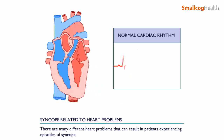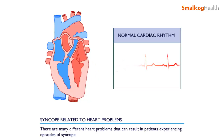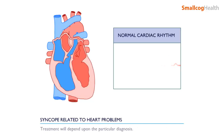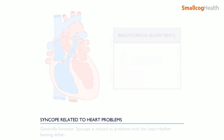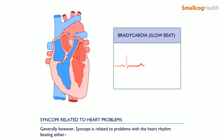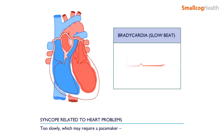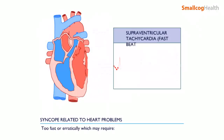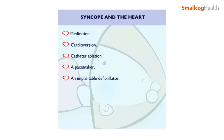Syncope related to heart problems: there are many different heart problems that can result in patients experiencing episodes of syncope. Treatment will depend upon the particular diagnosis. Generally, syncope is related to problems with the heart rhythm beating either too slowly, which may require a pacemaker, or too fast or erratically, which may require medication, cardioversion (the restoration of normal heart rhythm by controlled electric shock), catheter ablation, a pacemaker, or an implantable defibrillator.